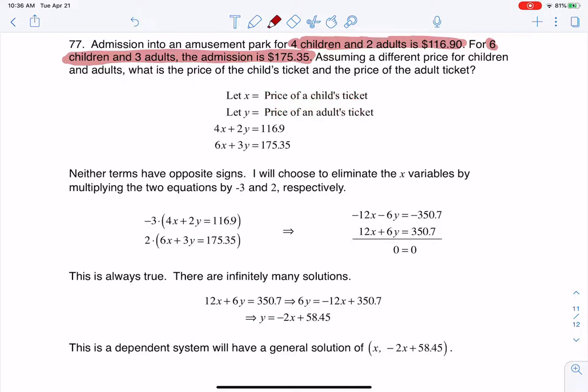So I'm going to call that X and Y and set up my system of two equations. I have four children plus two adults is $116.90, and then six children and three adults is $175.35.